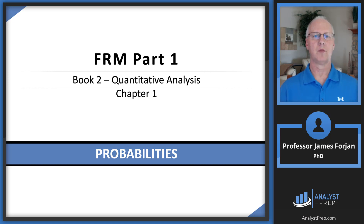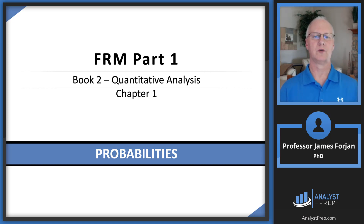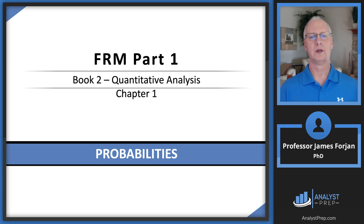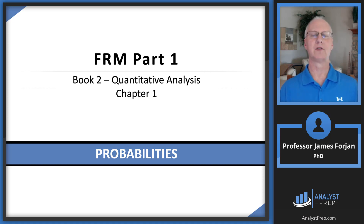This is FRM Part 1, Book 2, Quantitative Analysis, and this is Chapter 1: Probabilities. As good financial risk managers, what we're trying to do is identify the risks, quantify the risks, and then manage the risks. This first chapter called Probabilities is very much aligned with those three tasks.